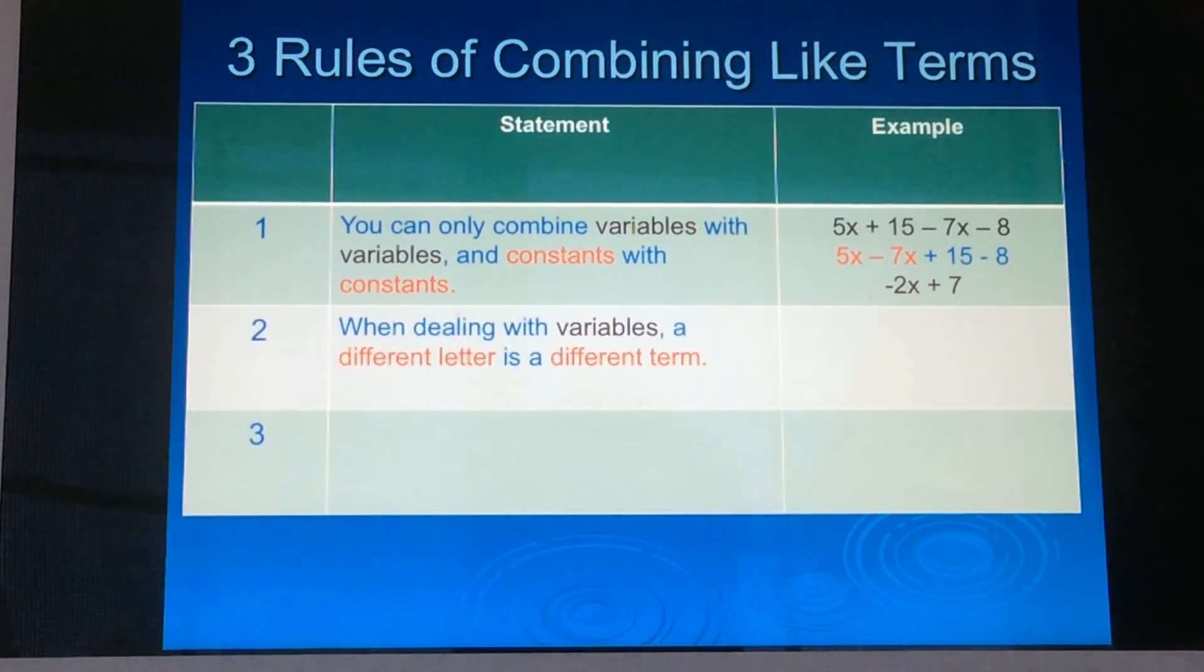The second rule states when dealing with variables, a different letter is a different term. So let's look at that example. As I look at this example, I see I have 7x plus 8y minus 5y plus 15x plus 30. So I see that I have x's, I have y's, and I have a constant. So again, I'm going to group them in their like terms. 7x plus 15x plus 8y minus 5y plus 30. And then simplify based on rule number two. 7x plus 15x is 22x plus 8y minus 5y is 3y and then plus 30. That is rule two.